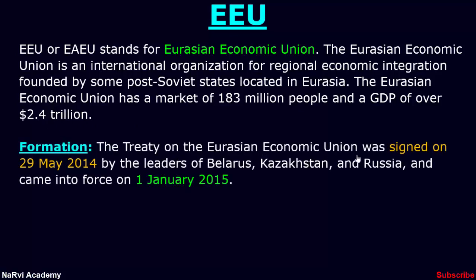The Treaty on the Eurasian Economic Union was signed on 29th May 2014 by the leaders of Belarus, Kazakhstan and Russia, and came into force on 1st January 2015. However, the idea of the Eurasian Economic Union came in the 1990s. Russia and the Central Asian countries in the 1990s were weakened economically and faced declines in their GDP as a result of the collapse of the Soviet Union. In 1994, during a speech at Moscow State University, the first president of Kazakhstan, Nursultan Nazarbayev, suggested the idea of creating a new regional economic bloc in order to connect the economies of Europe and East Asia. That's how this organization was founded.